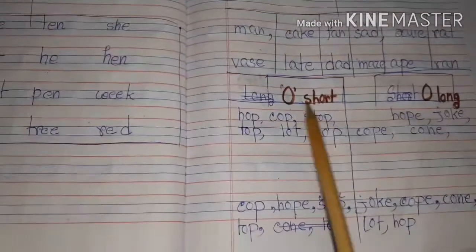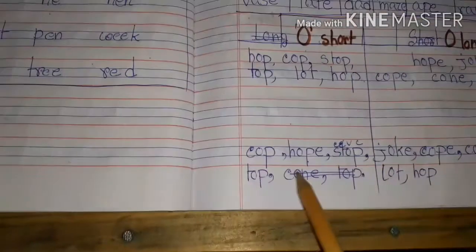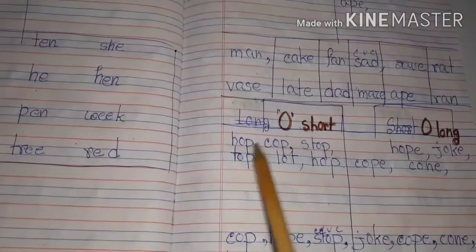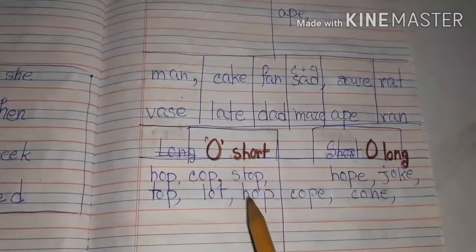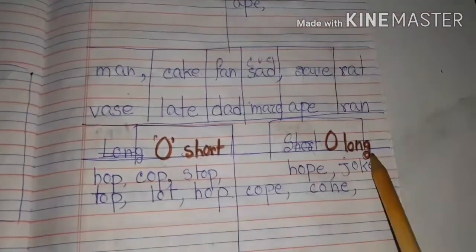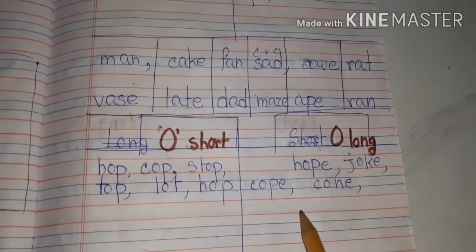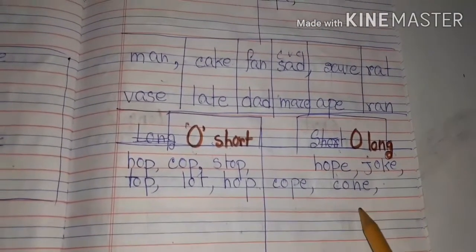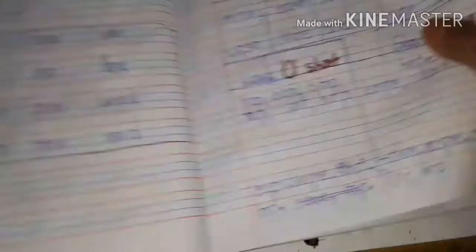Next, short O and long O. Short O words: hop, cop, stop, top, lot. Long O words: hope, joke, cope, cone — like this. So this one is short and this one is long.